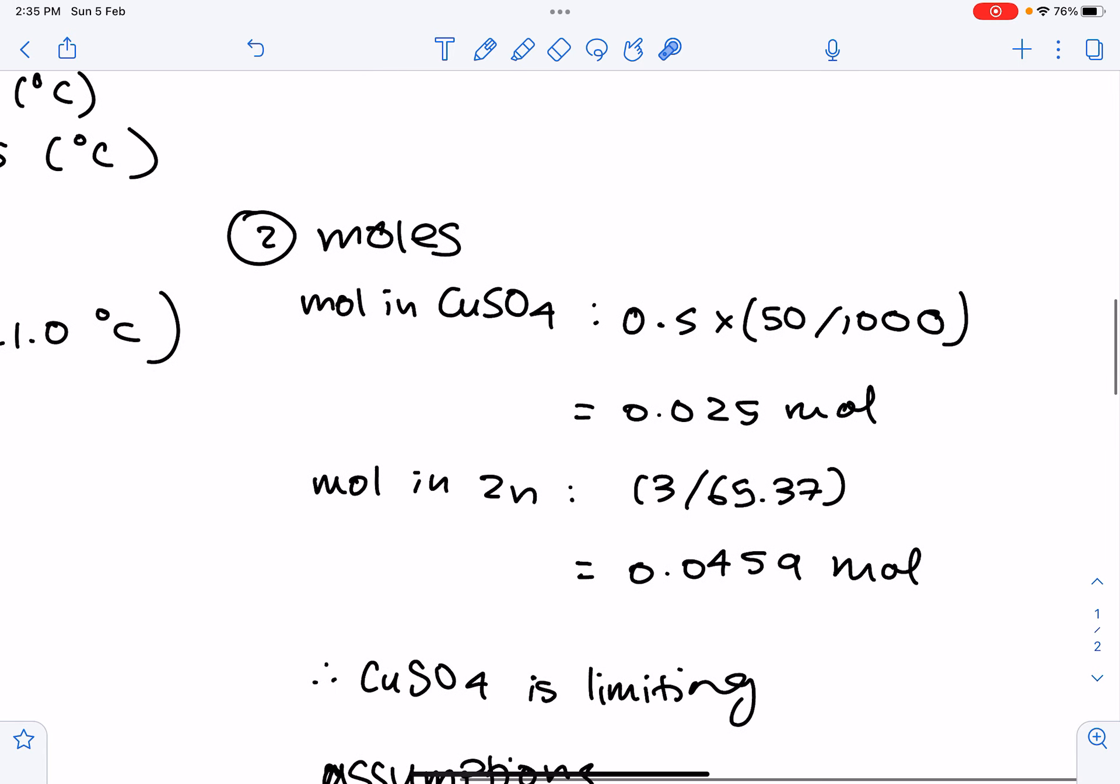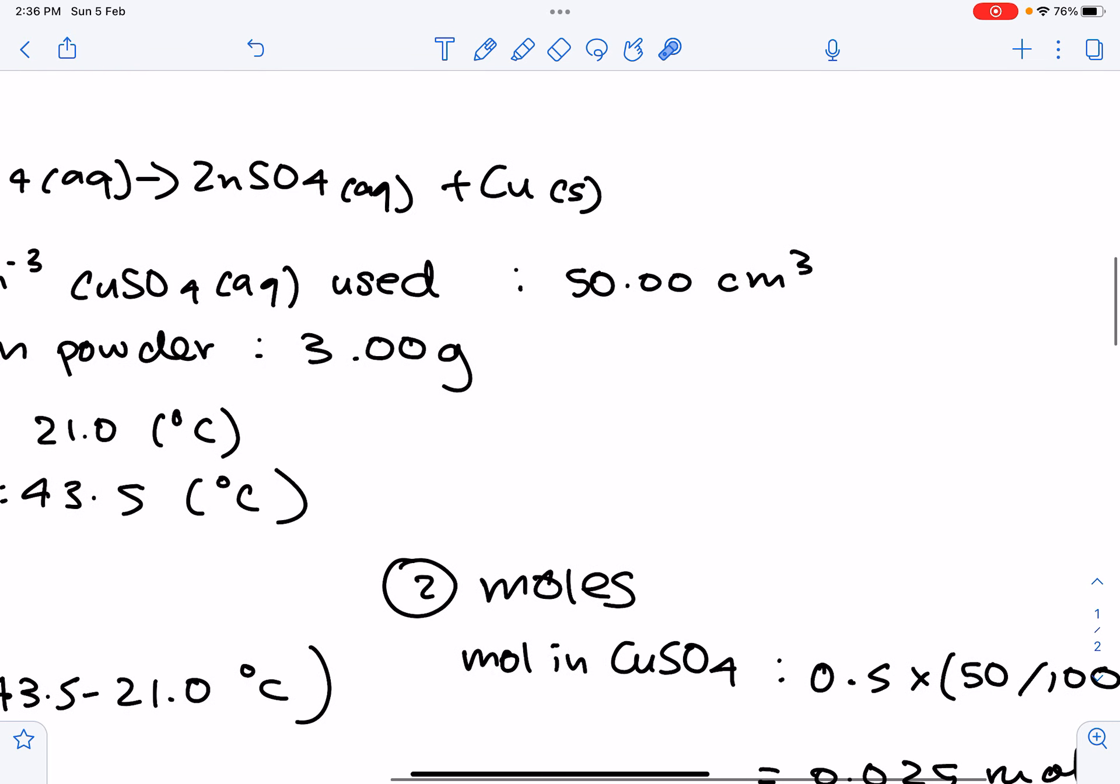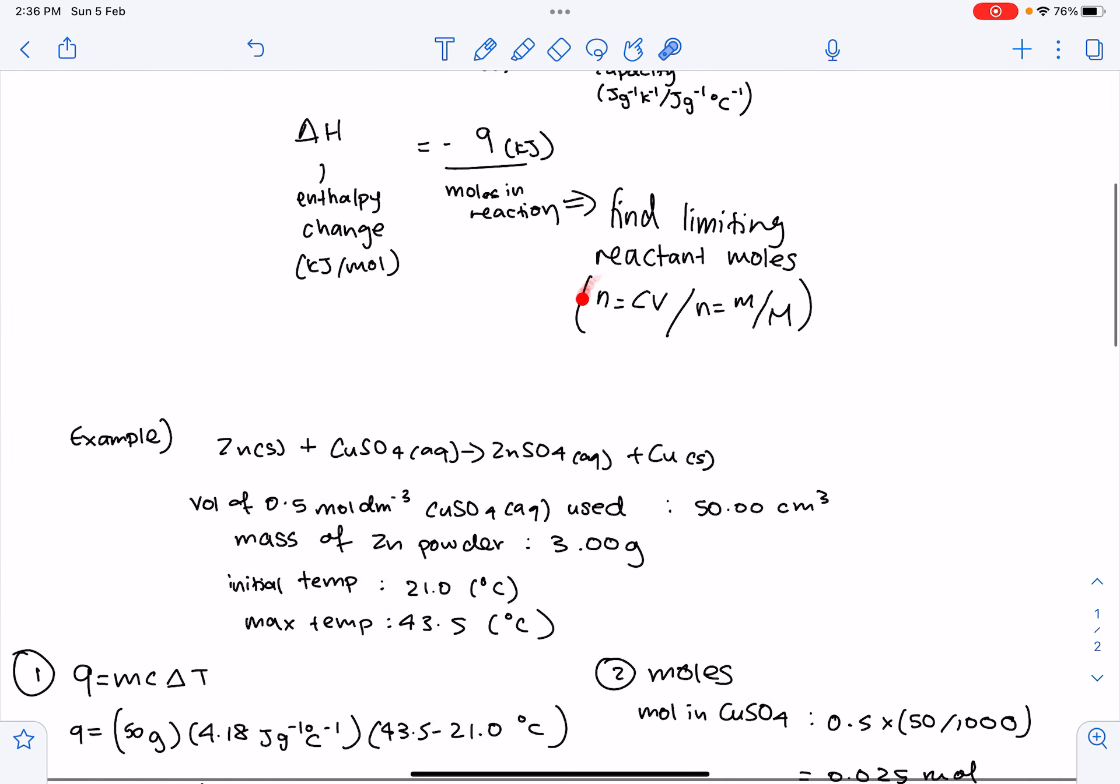Our second step is going to be to calculate the limiting moles. So, first, for the moles in copper sulfate, we have 0.5, which is the concentration. And we times that by 50, divided by 1,000, because we need to change 50 cm cubed into dm cubed. Therefore, the number of moles we get is 0.025 moles. This is just using the moles concentration equation we know over here, where number of moles is equal to concentration times volume.